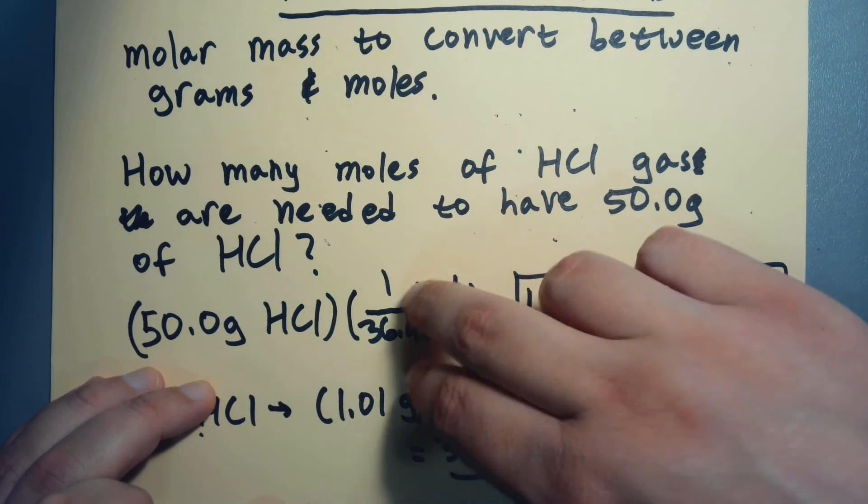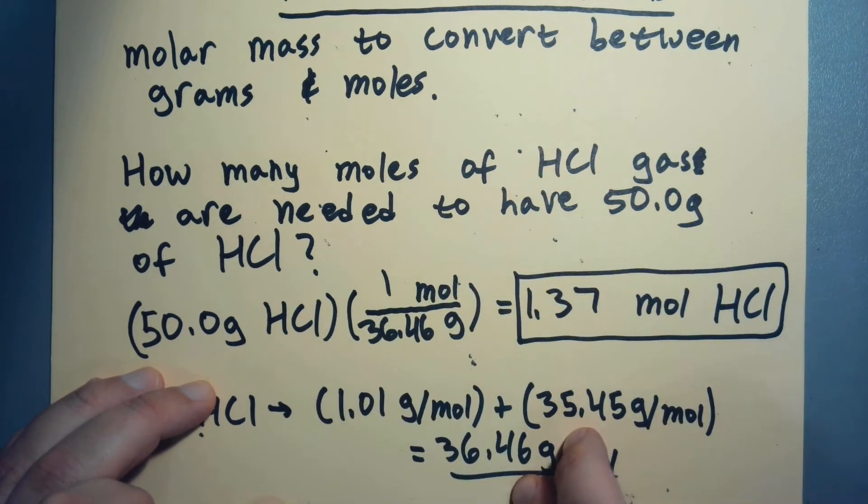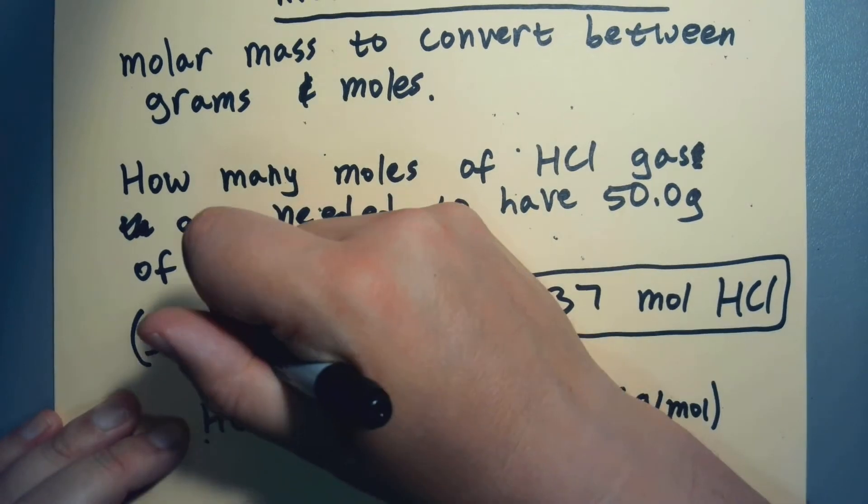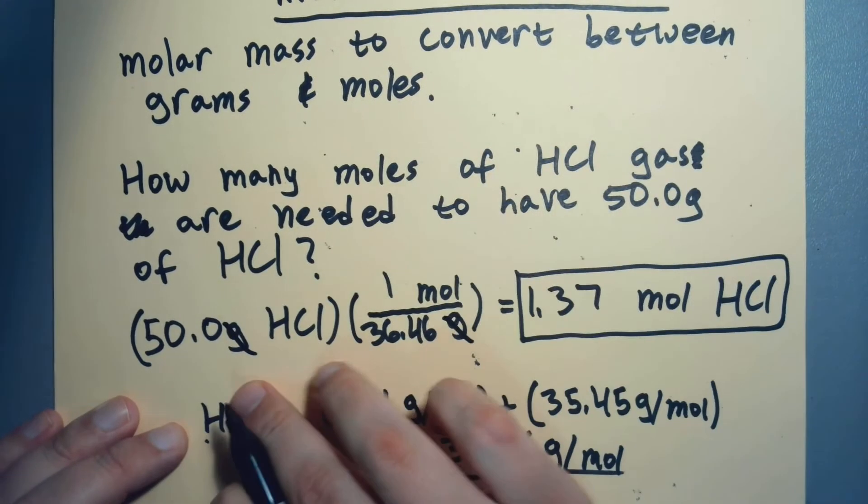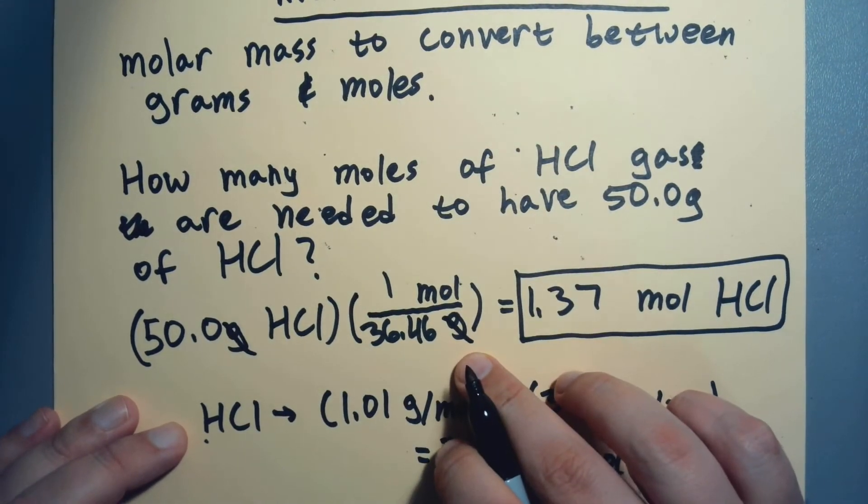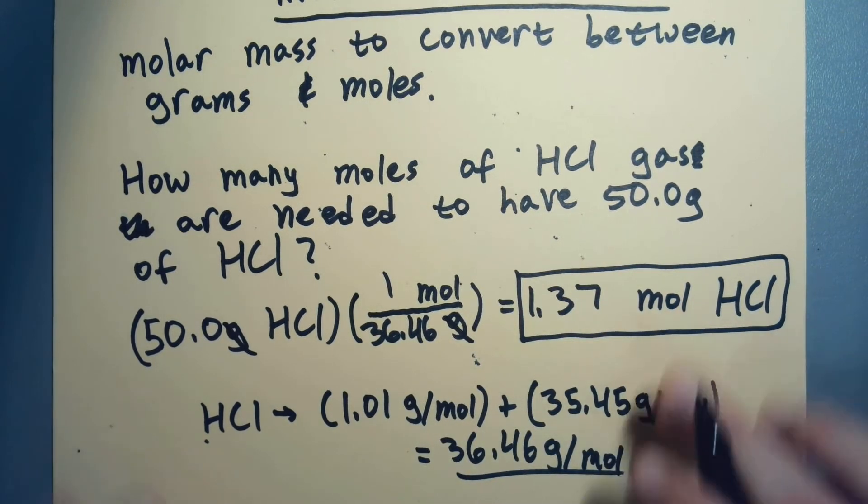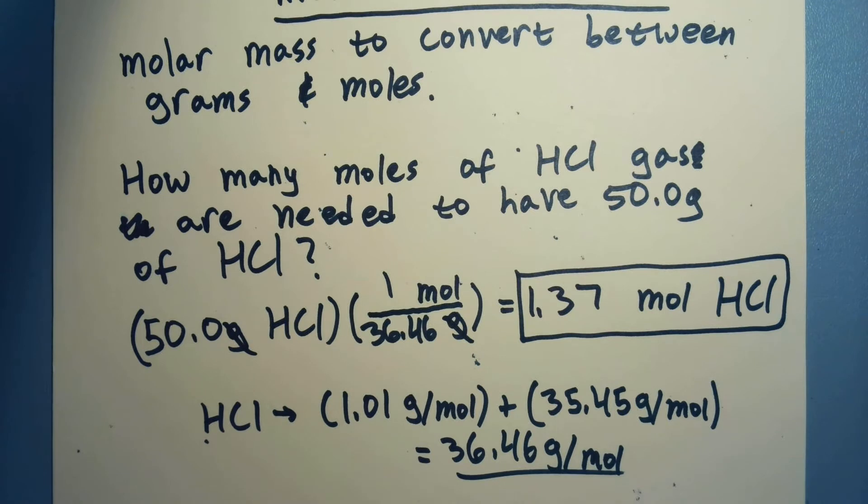If I've got to go from grams to moles, I need to flip - take my molar mass and flip it - because I need grams to cancel. I need grams divided by grams, and then moles on top to carry through to the end. That's what we're doing. Now we could do another direction if we start with moles.